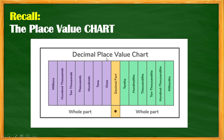We have the decimal place value chart. The whole numbers are to the left of the decimal point, and the decimal numbers are to the right. The whole number side starts with ones, tens, hundreds, thousands, ten thousands, hundred thousands, and millions. The decimal side starts with tenths, hundredths, thousandths, ten thousandths, hundred thousandths, and millionths.